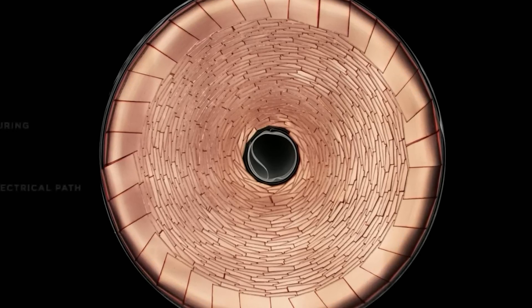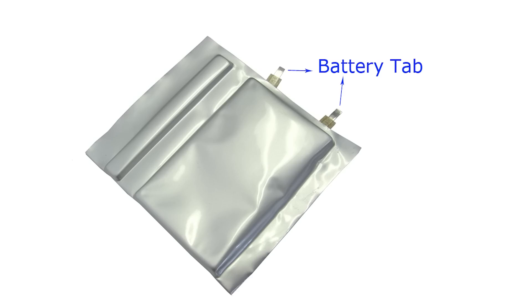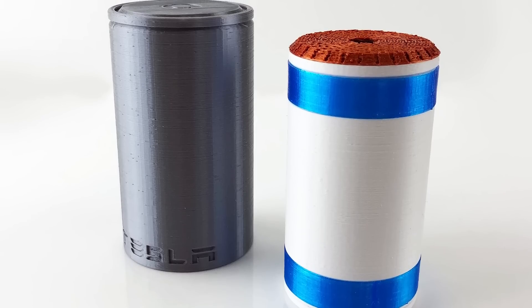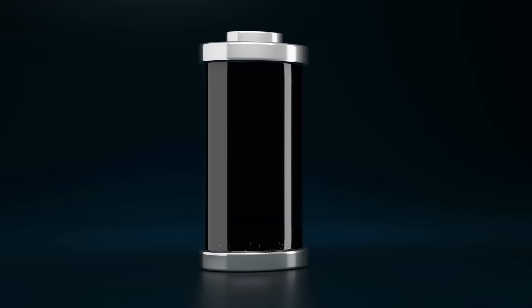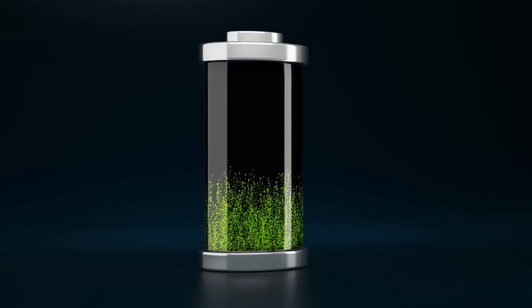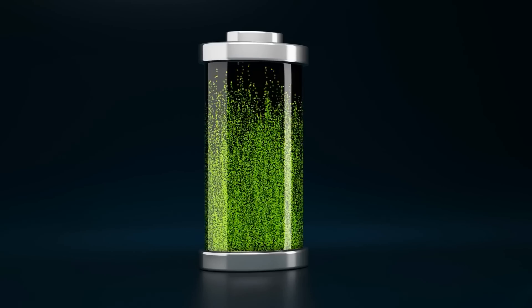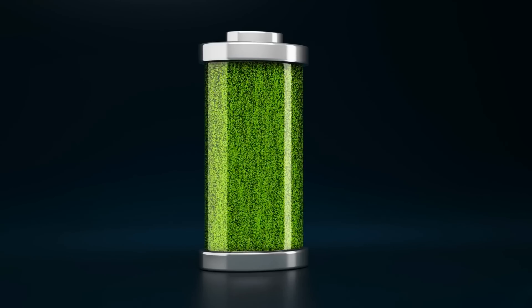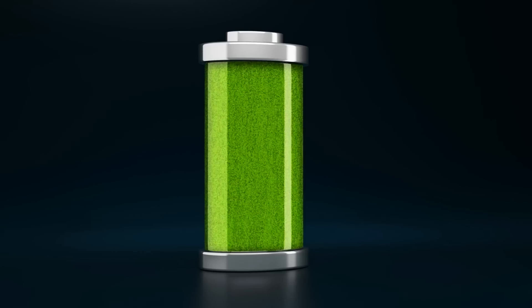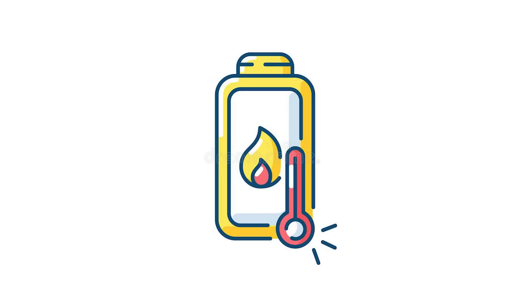So now, instead of your resistance and heat all concentrated in the little flimsy tab, it's distributed across the entire electrode. That allows for significantly more energy to exit and enter the cell more quickly with lower resistance, aka power. And it also allows for better thermal management at the same time.